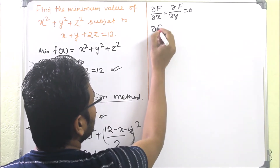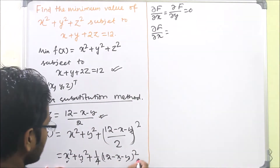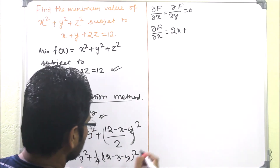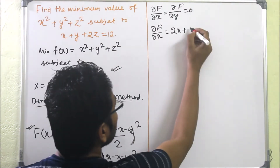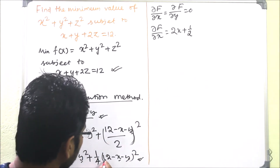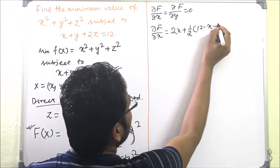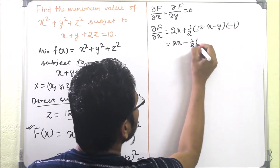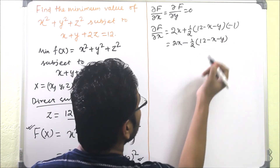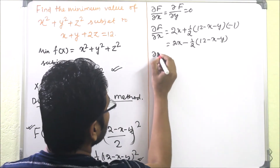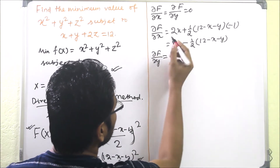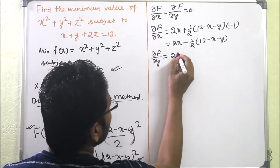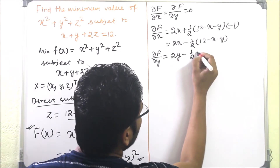We find ∂F/∂x with respect to x: it gives 2x plus the chain rule on the squared term, which is (1/4)·2·(12 − x − y)·(−1), simplifying to 2x − (1/2)(12 − x − y). Similarly, ∂F/∂y = 2y − (1/2)(12 − x − y).